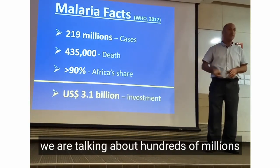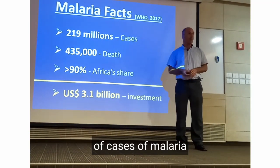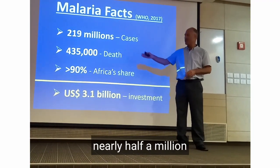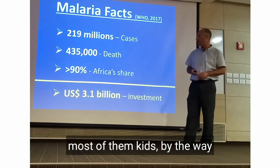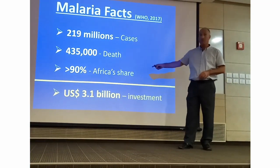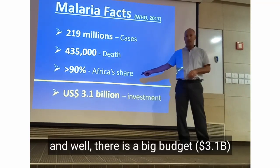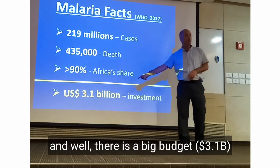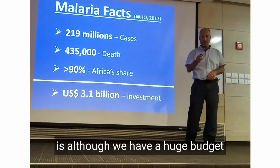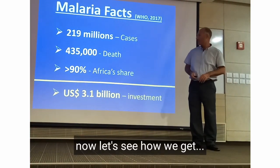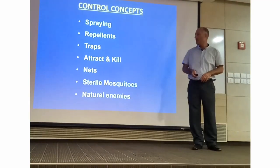Malaria — we're talking about hundreds of millions of cases. Nearly half a million dead people, most of them kids. Over 90% in Africa. And there is a big budget, yet we have this huge problem.